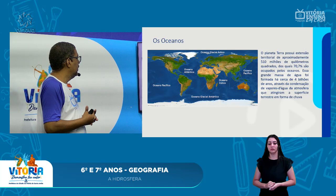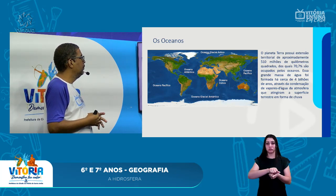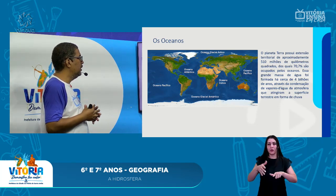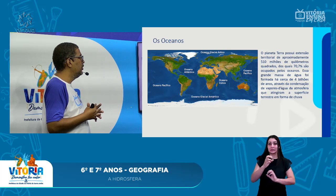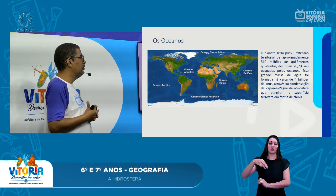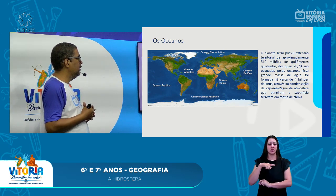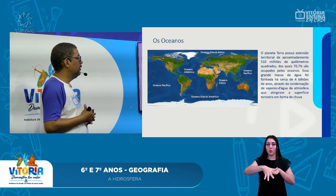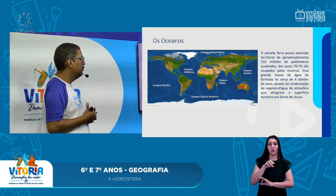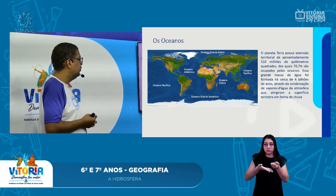Os oceanos compõem grande parte da superfície do planeta. O planeta Terra possui extensão territorial de aproximadamente 510 milhões de quilômetros quadrados, dos quais 70,7% são ocupados pelos oceanos. Essa grande massa de água foi formada há cerca de 4 bilhões de anos, através da condensação de vapores de água da atmosfera que atingiram a superfície terrestre em forma de chuva.